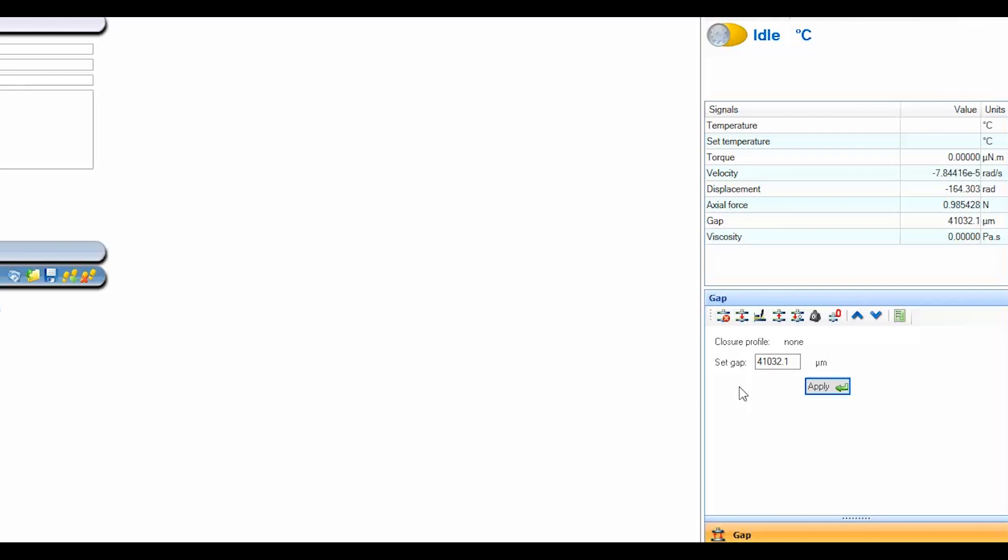Use this icon to zero the geometry gap. Then, use this icon to raise the instrument head and load the sample. After sample loading, press this icon to go to the trim gap. After trimming, use this icon to go to your final measurement gap.